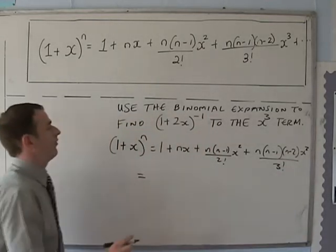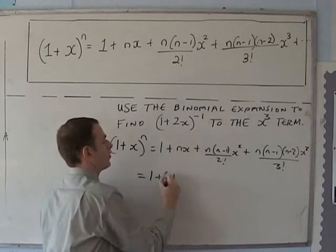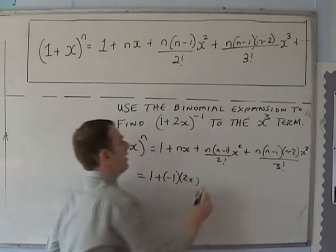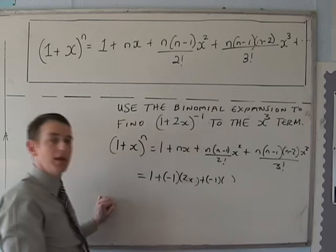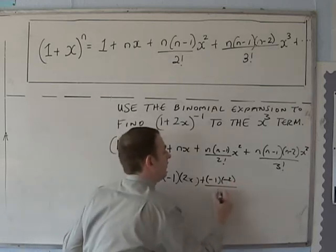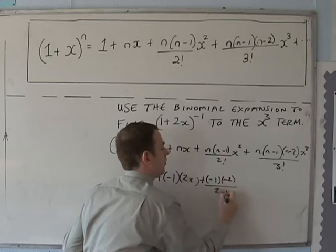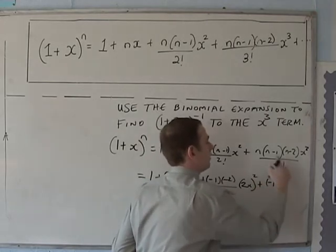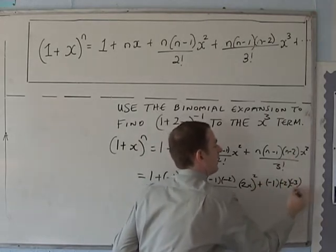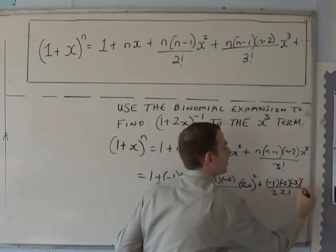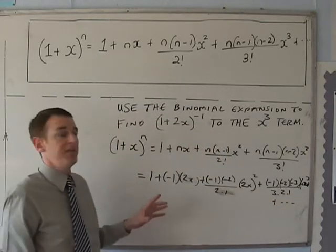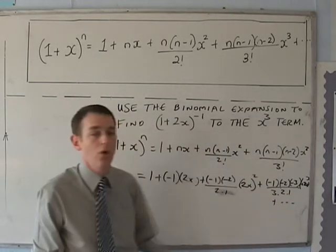That equals 1 plus n, which is -1, times 2x. Then plus (-1) times (-1 minus 1), which is -2, divided by 2 times 1, times (2x) squared. Then plus (-1) times (-2) times (-3), over 3 times 2 times 1, times (2x) cubed. Because it's a negative power, we could go on forever and ever — it's never going to stop.